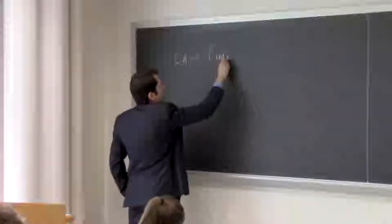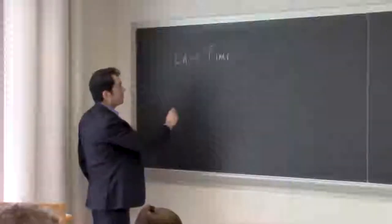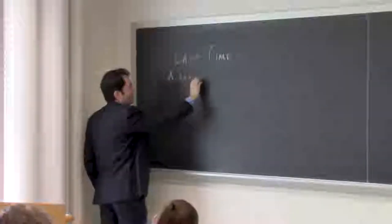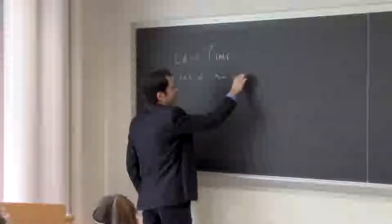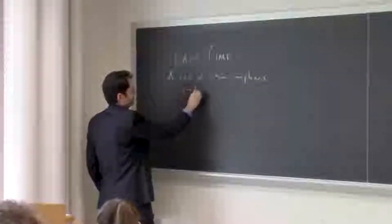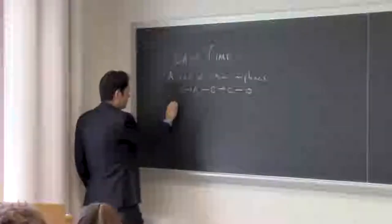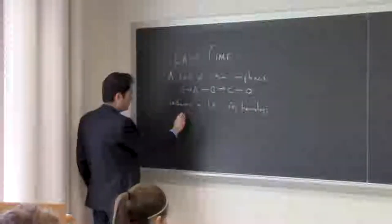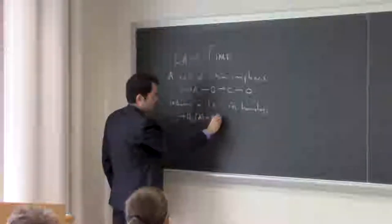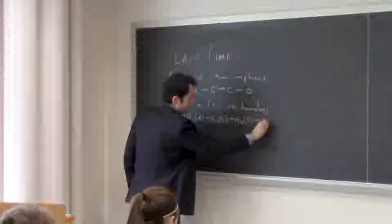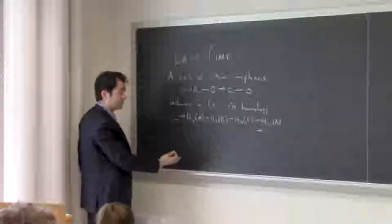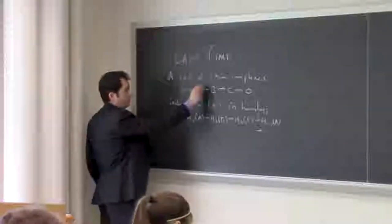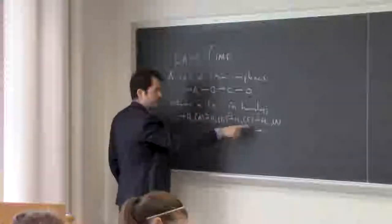Last time, we've been talking about homology and we proved two times ago that a short exact sequence of chain complexes induces a long exact sequence in homology. This came down to constructing a connecting homomorphism and then proving exactness. So these maps induce these maps, and then this one we constructed.